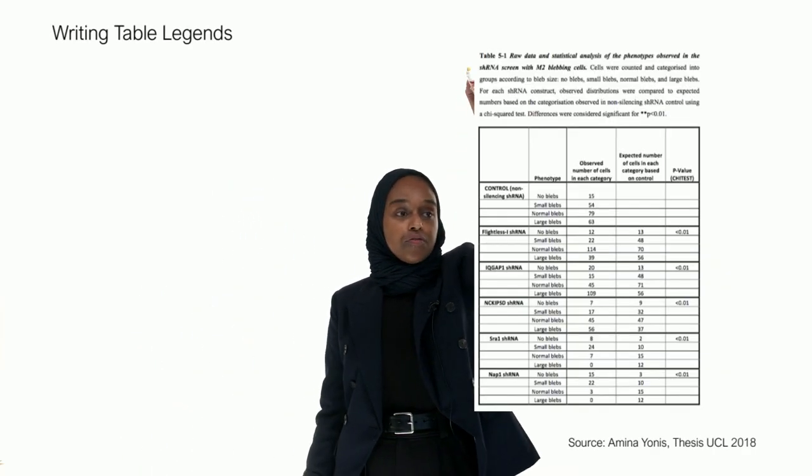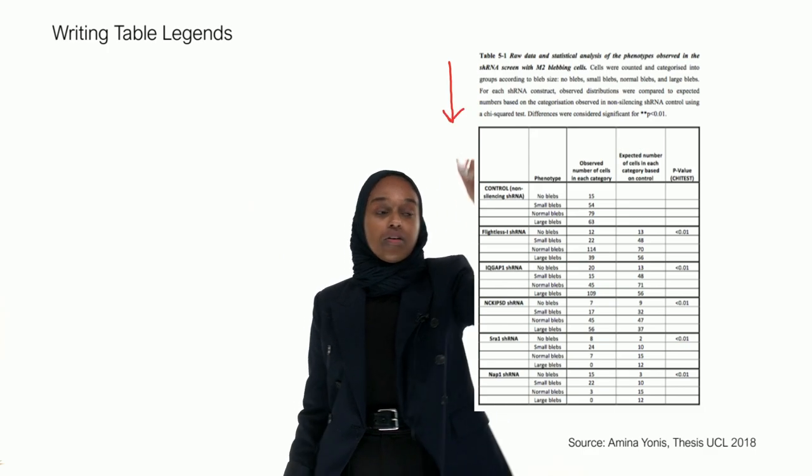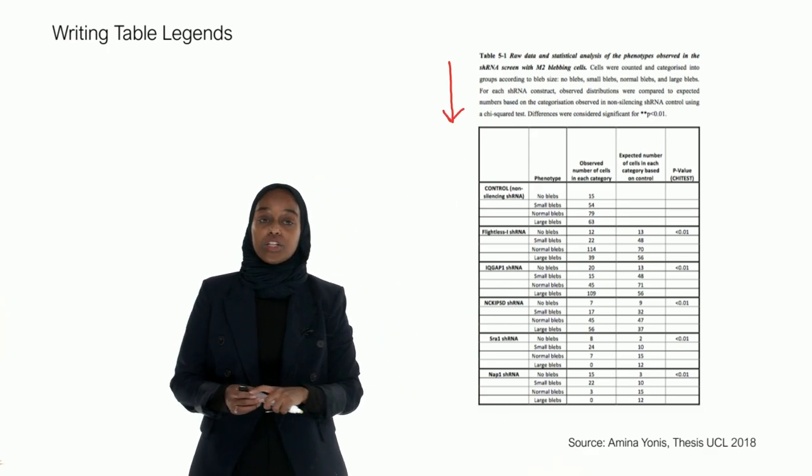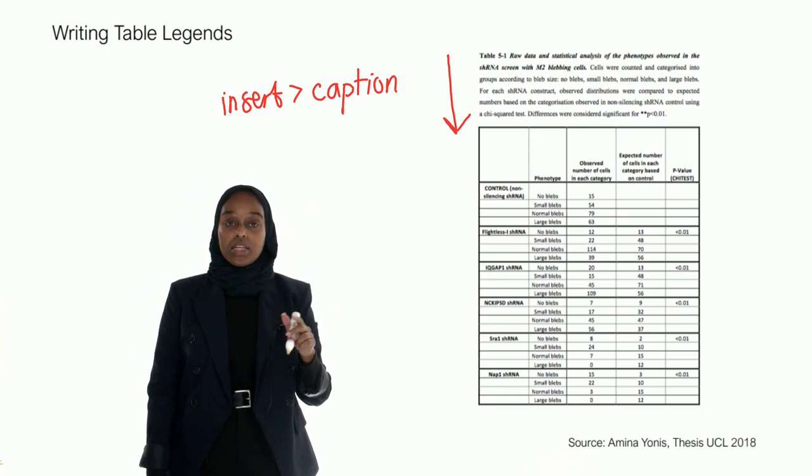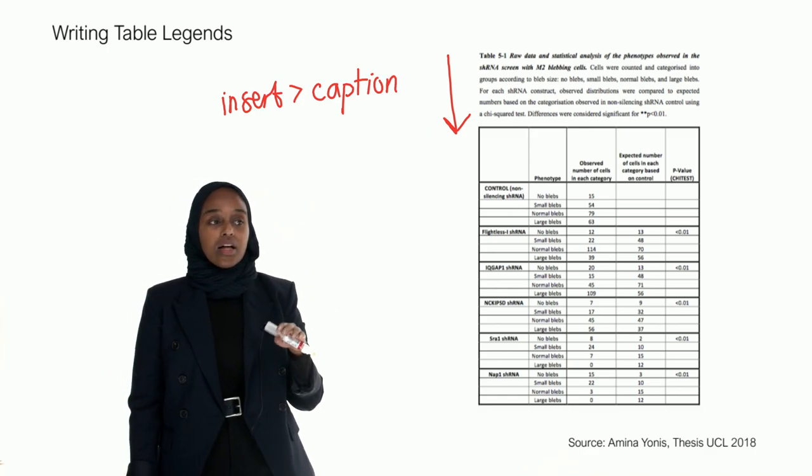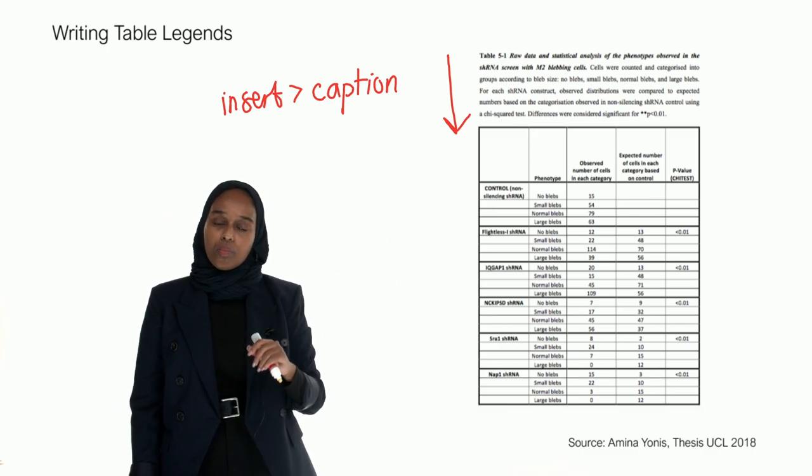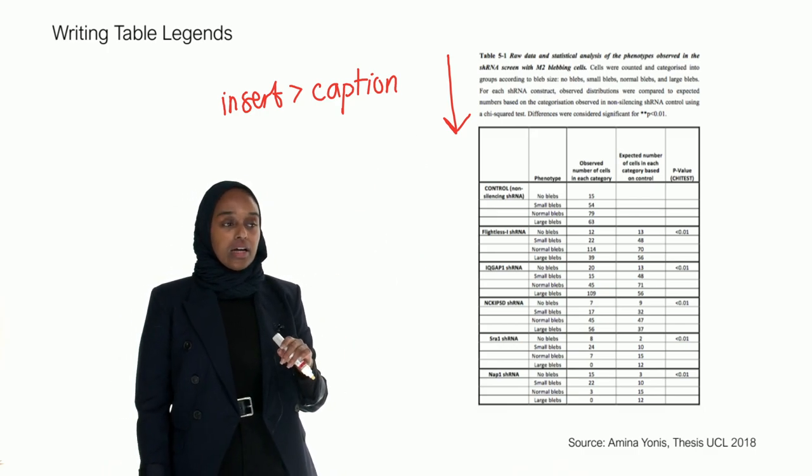Legends for a table are written at the top because you read from the top of a table and you read downwards. If you use this tool and then you select on the table, it automatically puts it at the top anyway. So just be aware of that if it doesn't.